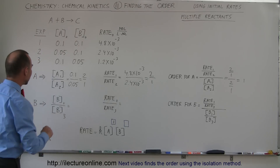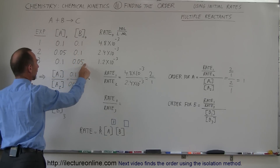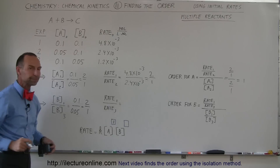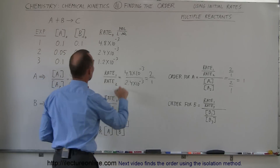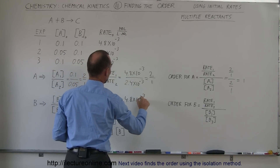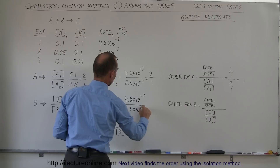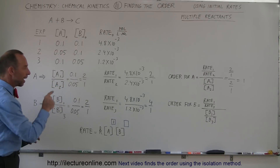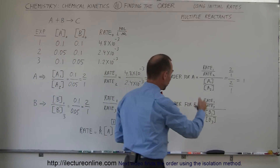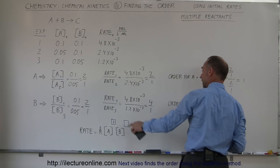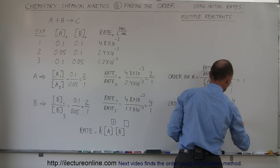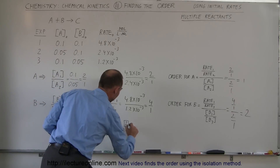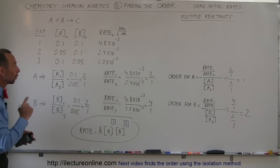Now for B: the concentration went from 0.1 to 0.05 from Experiment 1 to Experiment 3, a 2-to-1 ratio. The rate in Experiment 1 was 4.8×10⁻³ and in Experiment 3 was 1.2×10⁻³ — a 4-to-1 ratio. Dividing the rate ratio by the concentration ratio: 4 divided by 2 equals 2, so the order for B is 2. We place a 2 in the rate equation, giving us the complete rate law for this reaction.